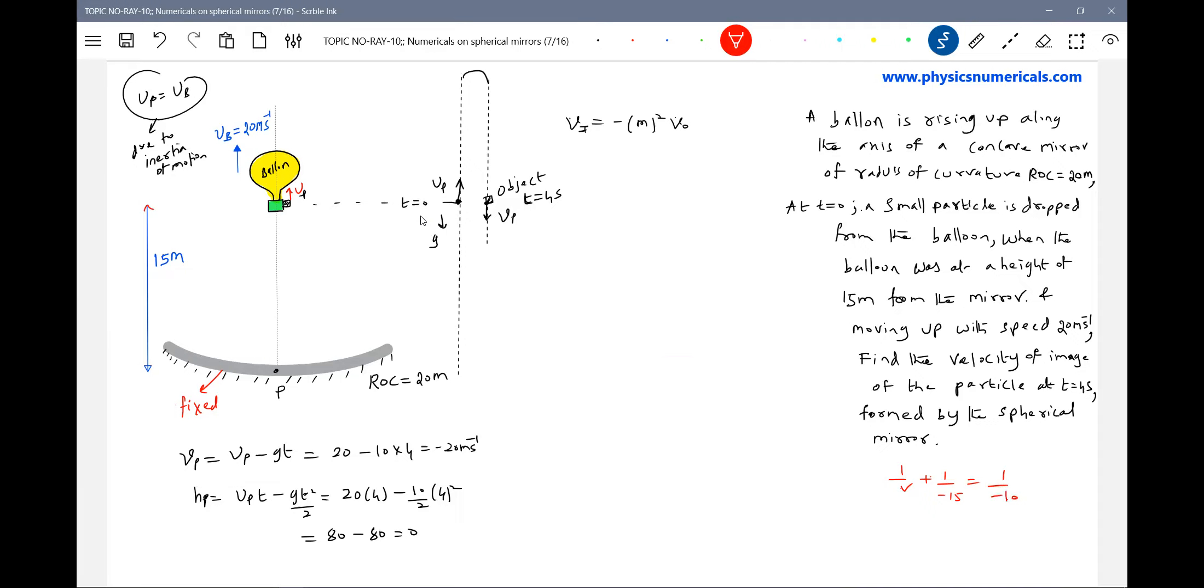Object distance minus 15, focal length of mirror, 10 meter. Here, here. 20 meter radius of curvature. R by 2 will be focal length minus 10. So V should be equal to minus 30. Magnification equal to minus V by U.